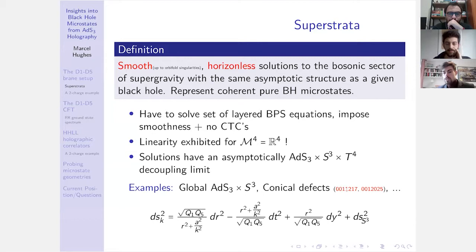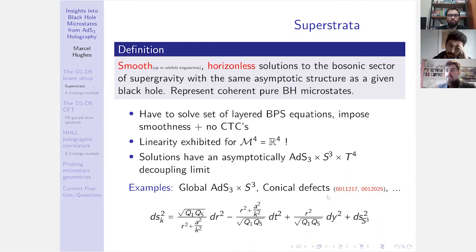Let me give a few fairly trivial examples understood a long time ago, about 20 years ago. Global ADS3 × S^3 is a solution — not a very exciting one. Empty ADS3 is a solution, and also supersymmetric conical defects. I can write down a metric like this: integer K describes a deficit angle in ADS3 crossed with an S^3. Some simple examples.